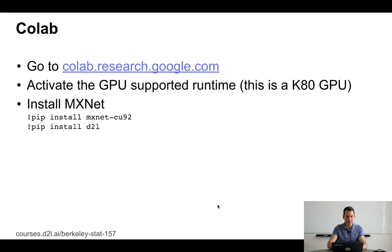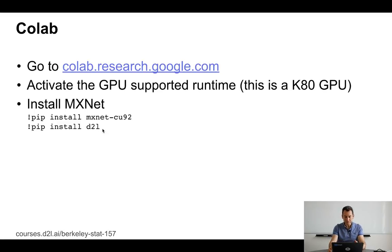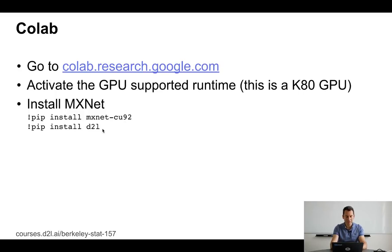If you want to use Colab, go to colab.research.google.com. Make sure you activate the GPU-supported runtime by selecting the appropriate runtime type. Then, before running MXNet, add two lines: pip install mxnet-cu92 and pip install d2l to your config. Then you're up and running on Colab. Colab is nice in that it gives you free, Google-sponsored access to GPU machines. The downside is that after some inactivity, the machine is torn down — you can't come back after dinner and expect everything to still be there. Your notebooks will survive, but the variables on the local machine will not. So you gain some things and lose some.